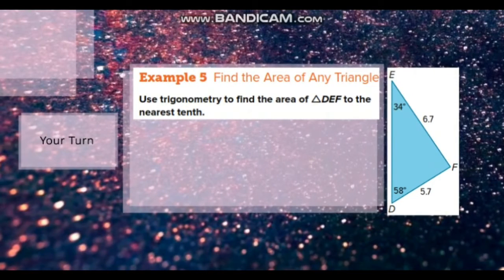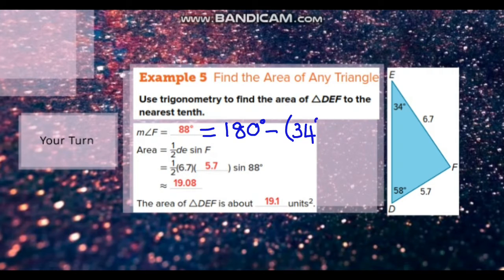So the first thing you're going to do is find the missing angle F. That is 180 degrees minus 34 degrees plus 58 degrees. So measure of angle F equals 88 degrees.